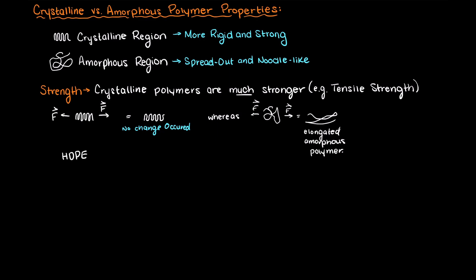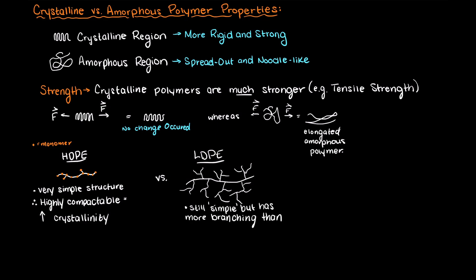For example, HDPE, high-density polyethylene, has about 2.5 to 3 times the tensile strength of LDPE, low-density polyethylene. HDPE has a high crystallinity of about 80-90%, whereas LDPE is considered to have a low crystallinity at about 40%.